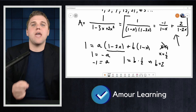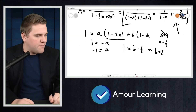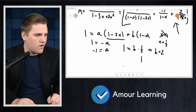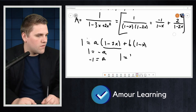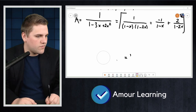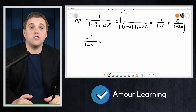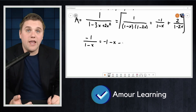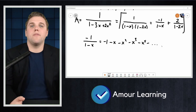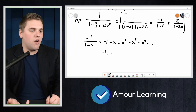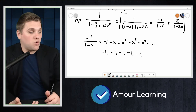Notice that these two fractions are generating functions we already know, and we can expand each of them. For example, −1 over (1 − x) expands as −1 − x − x² − x³ − x⁴ − …, which generates the sequence −1, −1, −1, −1, −1, and so on.